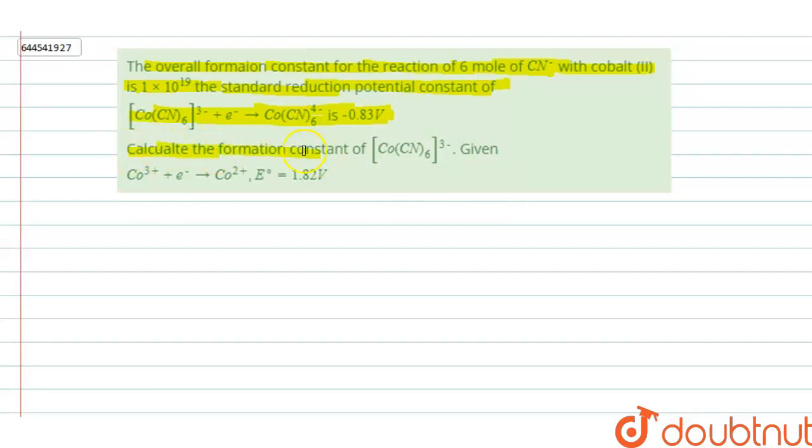So what you have to do is calculate the formation constant for [Co(CN)6]3-. Given that Co3+ plus electron gives Co2+ and its E° is given 1.82.